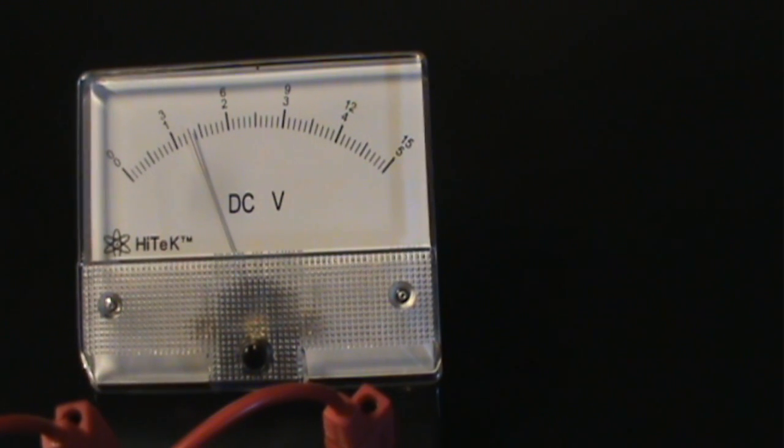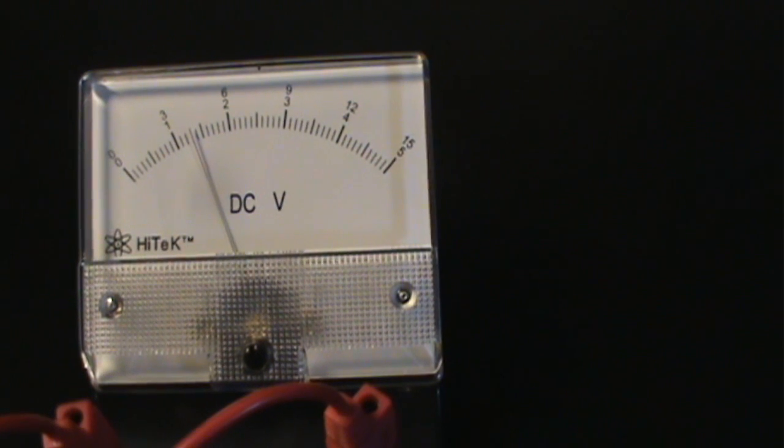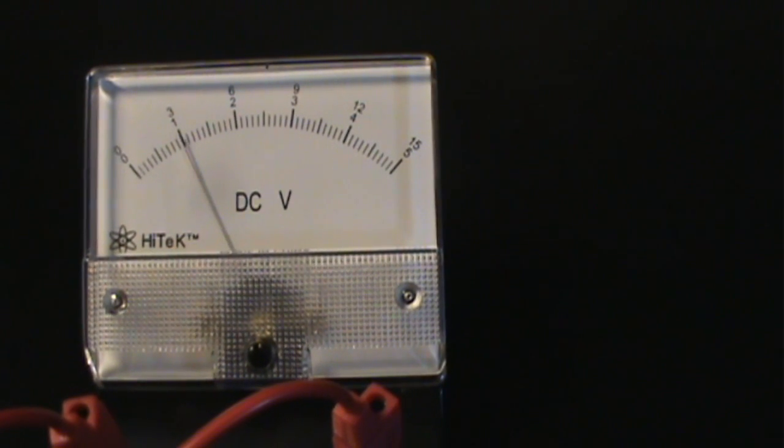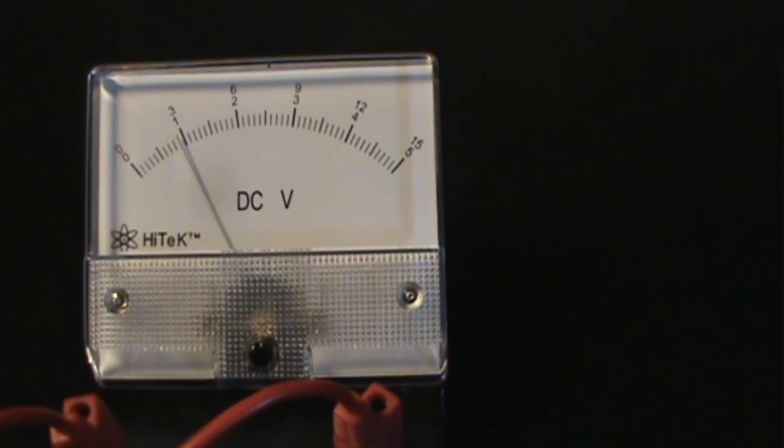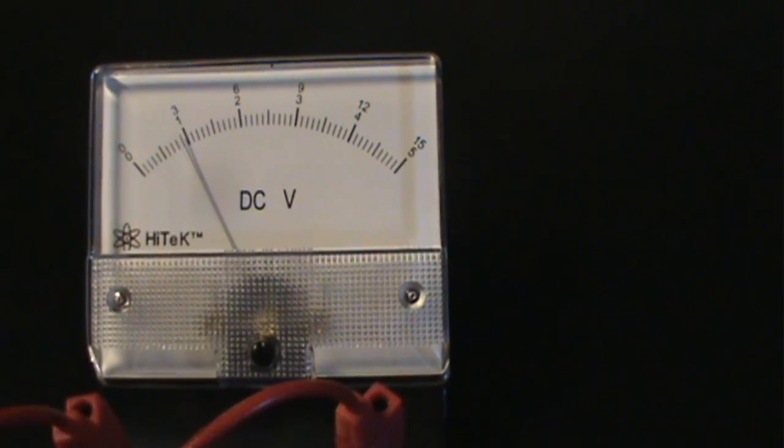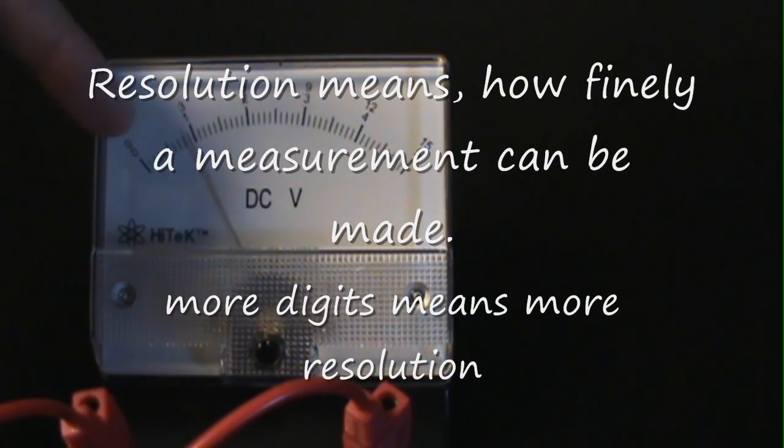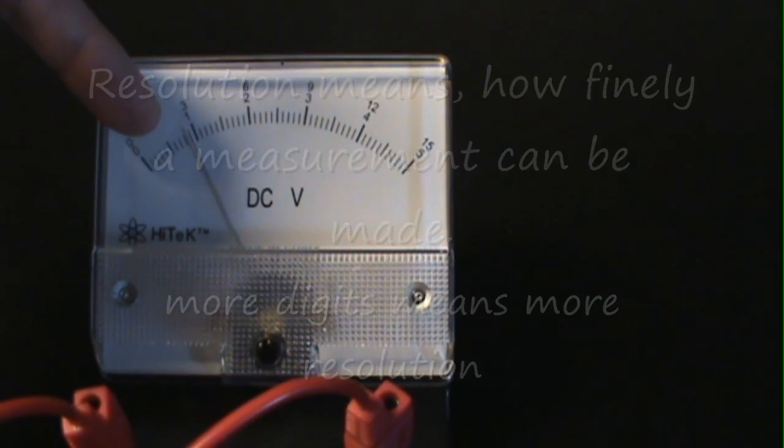But you'll notice it's kind of difficult to read because there isn't a whole lot of resolution here. Each large division is 3 volts, which means the intermediate division is 1.5. But we're not even breaking 3 volts.